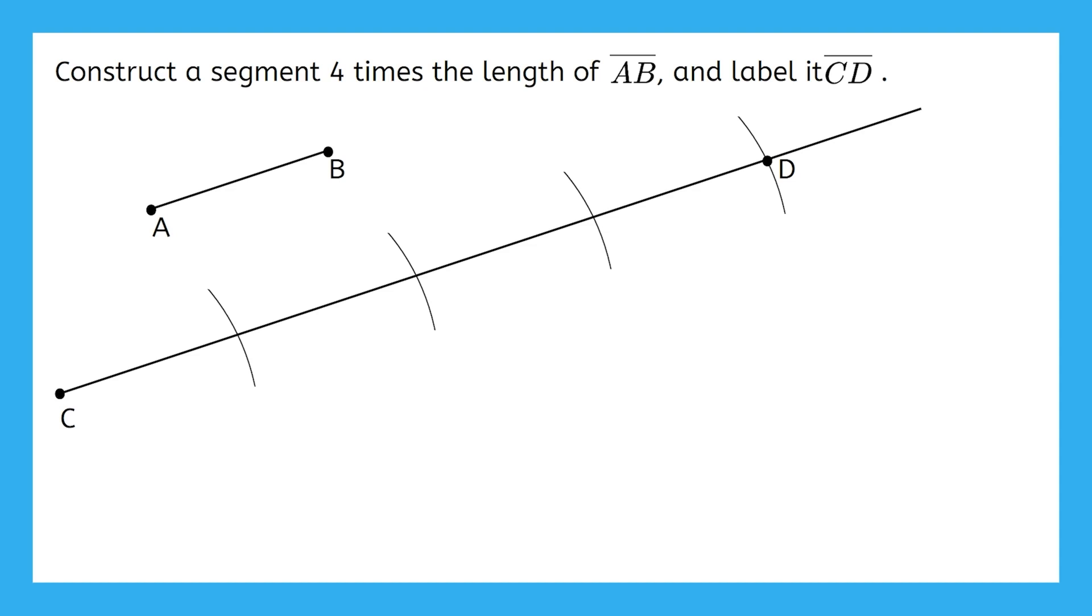Go ahead and lightly erase the excess line segment that didn't get used and the arcs if you want to, but it's best not to completely erase these markings because they're a good reminder that we used a compass and straightedge to make this. In the previous problem, we were able to write a congruent statement to verify that the segment we constructed was congruent to the original. Can we do the same thing here? No, we'll not be able to write a congruent statement because segment CD is not congruent to segment AB. It's four times longer.